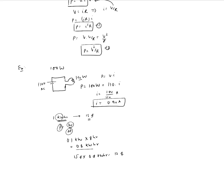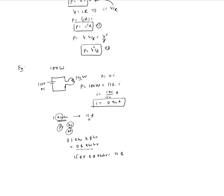If you've ever wondered how to compute the cost of electricity in your home, now you know what to do. Find the power rating for each appliance, add them together, see how many hours you operate them, multiply to find total energy consumption, then find your rate per kilowatt hour to determine your electricity bill.